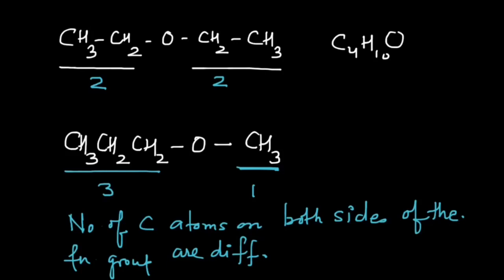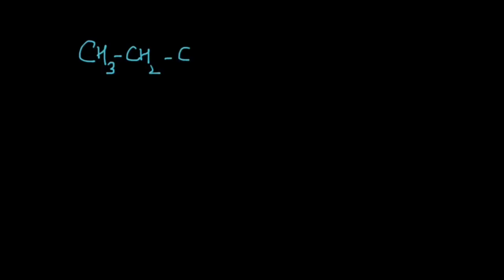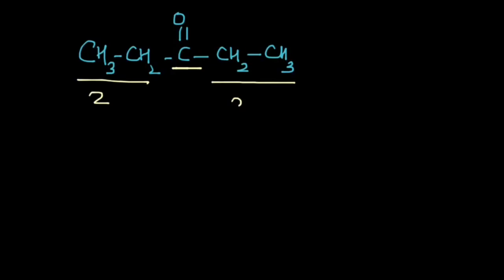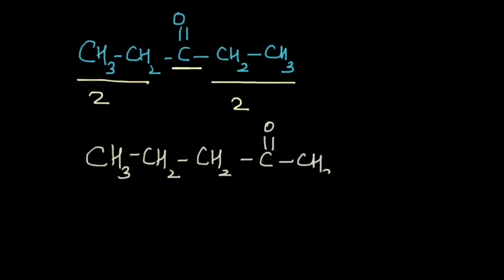Let's take another example: CH₃CH₂CH₂–C=O–CH₂CH₃. The number of carbon atoms on the left side of the ketonic functional group is two, and on the right it is also two. Now consider CH₃CH₂CH₂CH₂–C=O–CH₃ — this time the number of carbon atoms on the right is one and on the left is three.